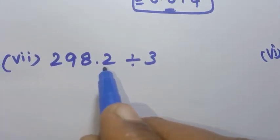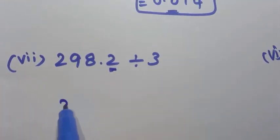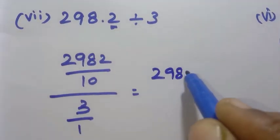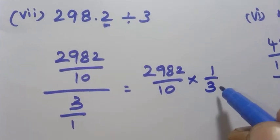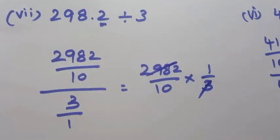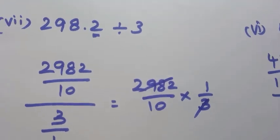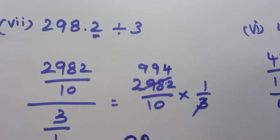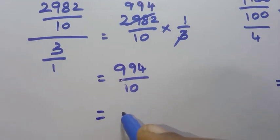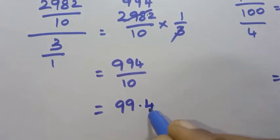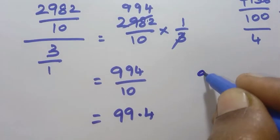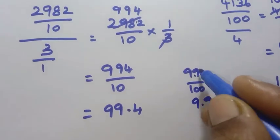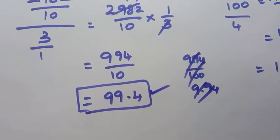Seventh one: 298.2 divided by 3. One decimal place, so 298.2 is 2982 by 10. Divided by 3, giving 2982 by 10 into 1 by 3. Cancel 3: 3 nines are 27, remainder 2; 3 nines are 27, remainder 1; 3 fours are 12 — giving 994 by 10. Dividing by 10 gives one decimal place, so 99.4 is the answer.